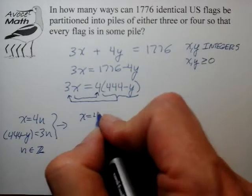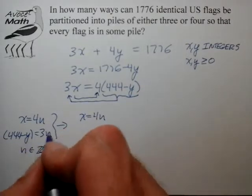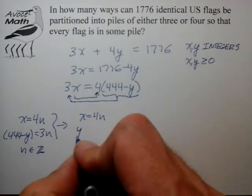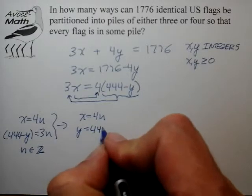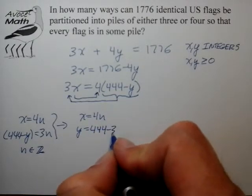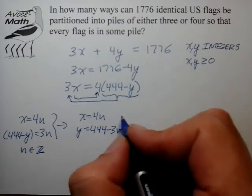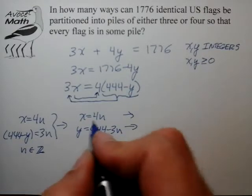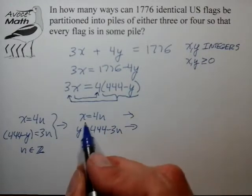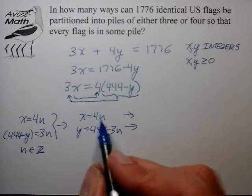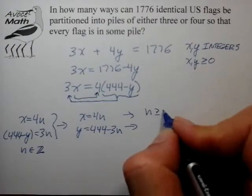x is equal to 4n. Now we have to decide what our constraints are for n. x we want to be greater than or equal to 0, so that just means n has to be greater than or equal to 0.